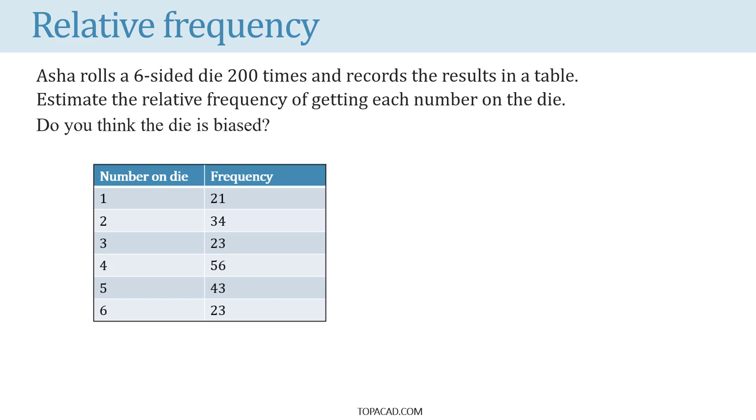Asha rolls a six-sided die 200 times and records the results in a table. Estimate the relative frequency of getting each number on the die. Do you think the die is biased?